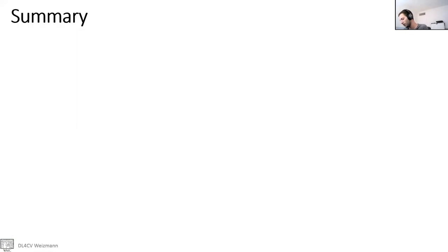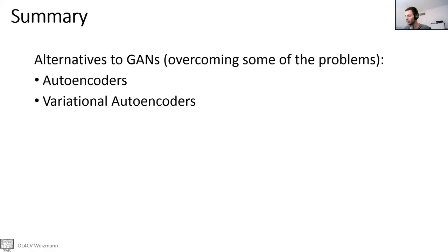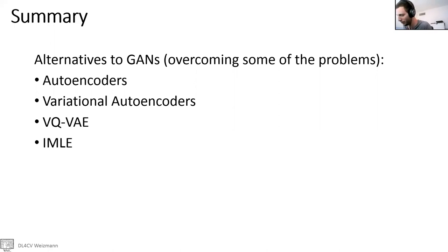To summarize: we talked about alternatives to GANs that overcome some of the problems presented at the beginning of the talk. We discussed autoencoders, then variational autoencoders which are already a generative model, then VQVAE — the vector quantized autoencoder that produces very nice looking results — and we finished with IMLE, which is a different way to approach generative modeling without GANs.